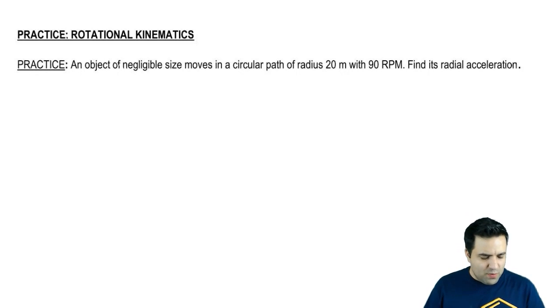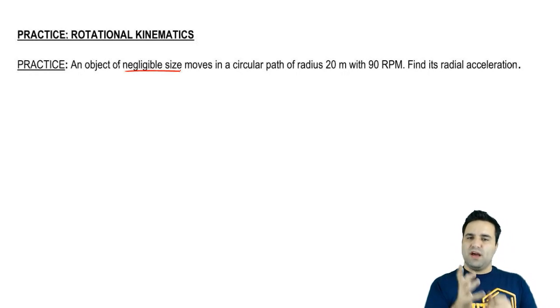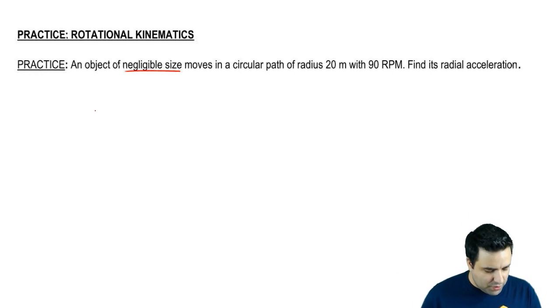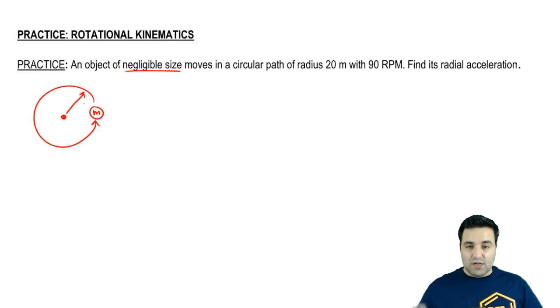All right, so let's check out this practice problem. We have an object of negligible size. This means it's a point mass without a radius in a circular path. So a tiny little m in a circular path. And the circular path has a radius of 20 meters. This means that the object moves at the edge of a circle of 20 meters.